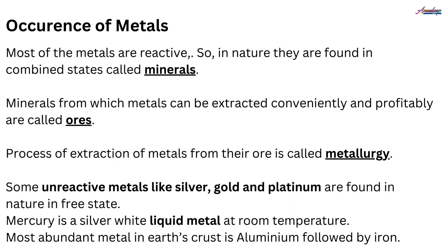After the physical properties of metals, we will now study the occurrence of metals — how we can get these metals in nature. Most metals are reactive in nature, so we get them in a combined state, which we call minerals. Those minerals from which we can easily extract metals are called ores, and the process of extraction of metals from their ores is called metallurgy. Some unreactive metals are found in a free state, for example silver, gold, and platinum. Mercury is a silver-white liquid metal at room temperature. The most abundant metal in the Earth's crust is aluminum, followed by iron.